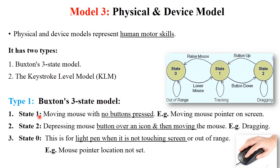State one means moving the mouse with no button press — for example, moving the mouse pointer across the screen. State two means depressing the mouse button over an icon and then moving the mouse — for example, dragging a particular file into a particular folder, meaning you continuously press a particular button of the mouse. State zero is for a light pen when it is not touching the screen or is out of range — for example, the mouse pointer location not set, meaning a particular location of the mouse has not been set. This is called state zero.